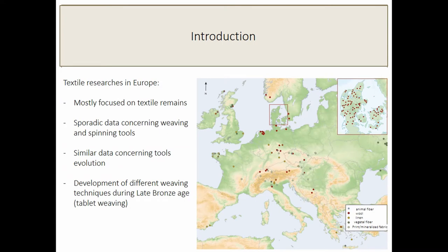This is the first overview of textile research in Europe. As you can see on this map, this is not comprehensive — it shows only textile finds such as wool, which you can see in Denmark, and some finds in Germany, mostly in Switzerland and in France. This is particularly relevant because it covers the area I studied.